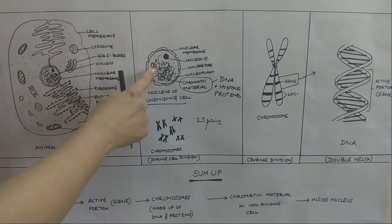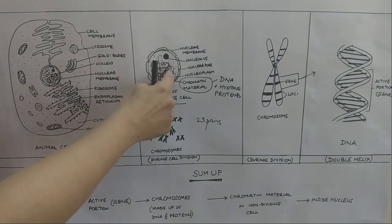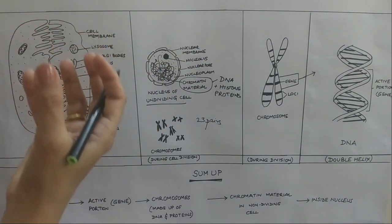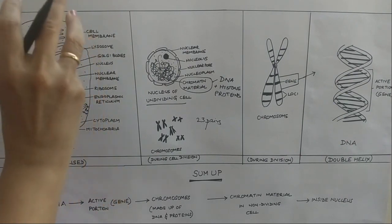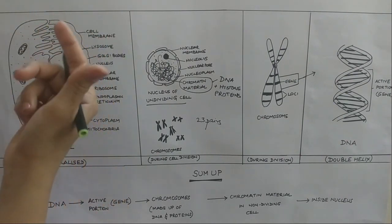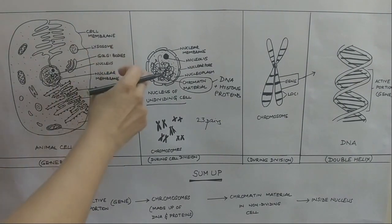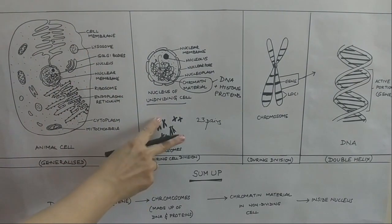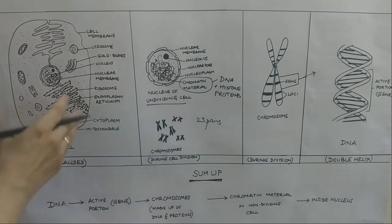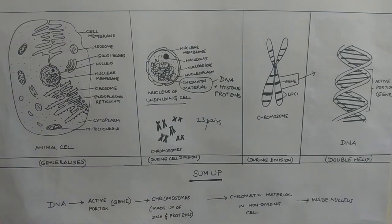What happens in reality is that during cell division, this mass of entangled threads starts condensing or starts becoming entwined. And then it forms rod-like structures which are called the chromosomes. These chromosomes are found in pairs. One from each pair goes to each of the gametes. Cell division is a separate topic. We will see that separately.